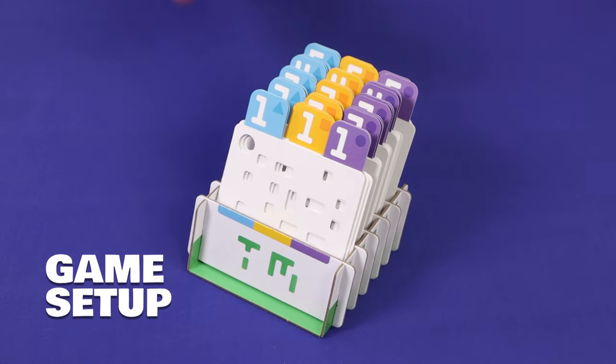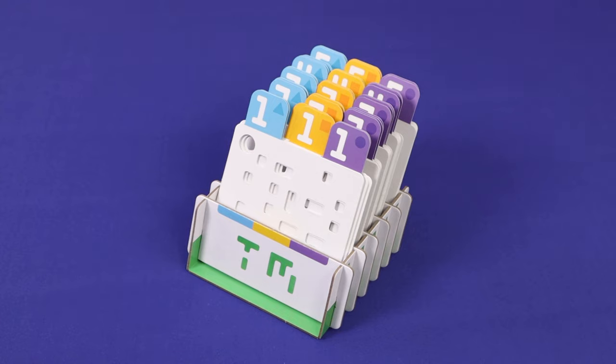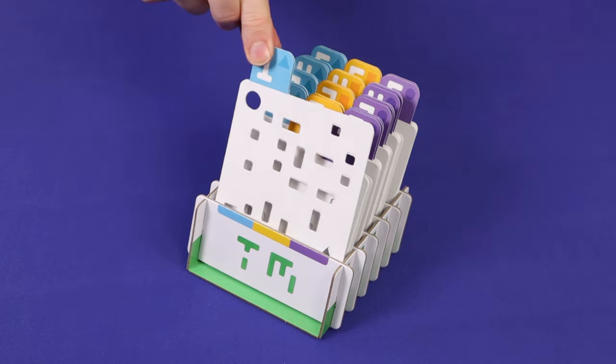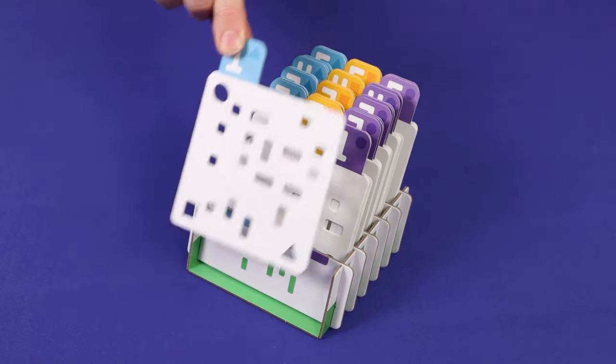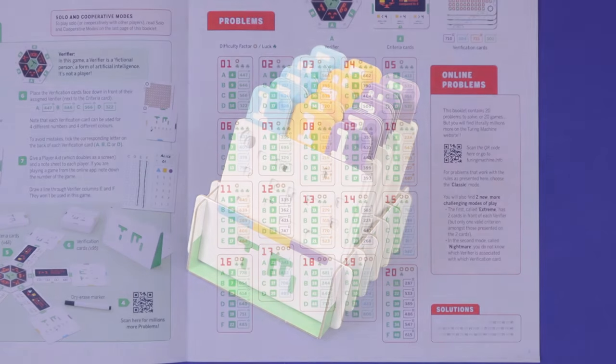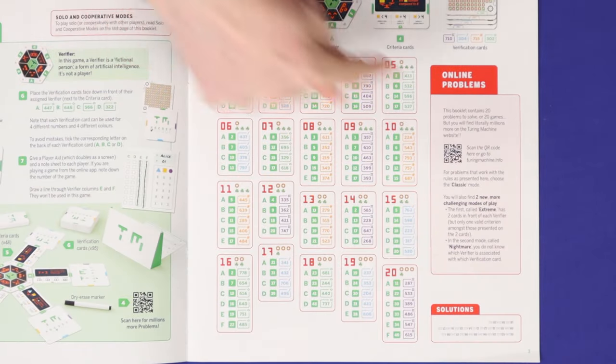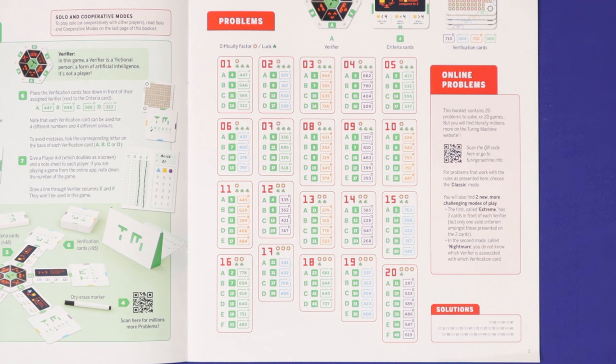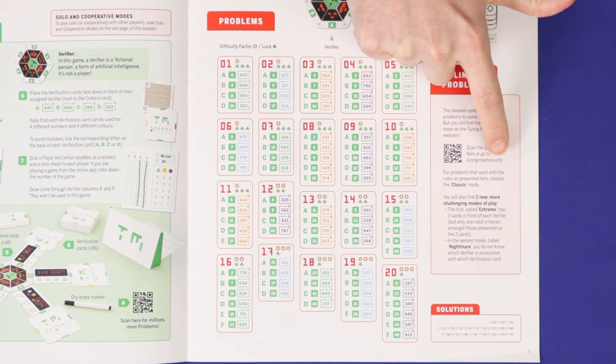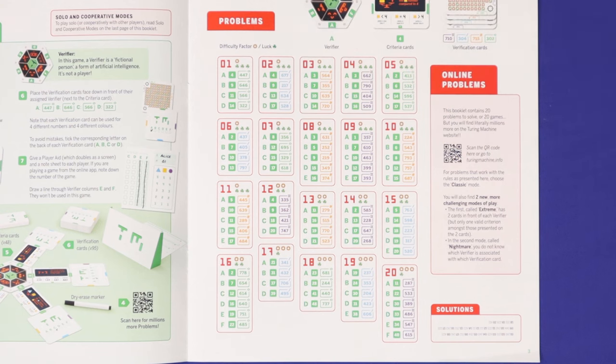To set up, put all of the punch cards into the holder, the number five through to the number one. All copies of the same card, for example all of the blue ones, are identical. Choose a scenario, either from the rulebook or from the website, which you can get to turingmachine.info, or by scanning this QR code.